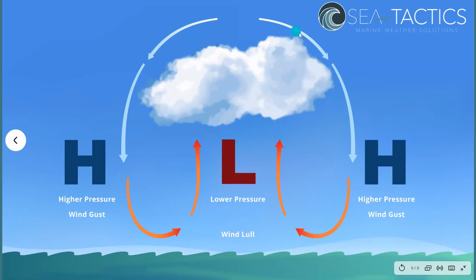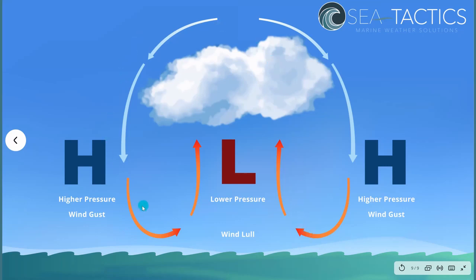As the air comes up, it rises, it condenses, forms the cloud. And on the edges, the air is much cooler, and so it's sinking on the edge. Sinking air away from the cloud creates higher pressure, and that creates a relative wind gust. So this whole cloud system, just for each individual cloud, is actually a little miniature low pressure, high pressure system.